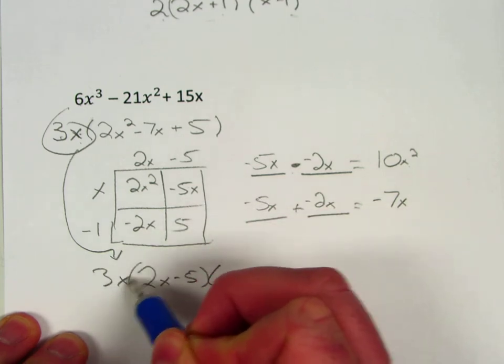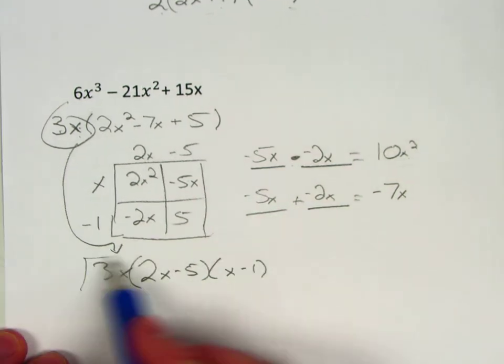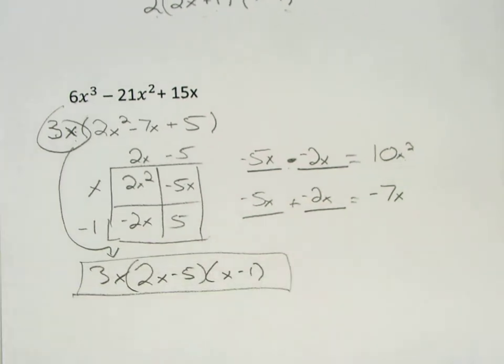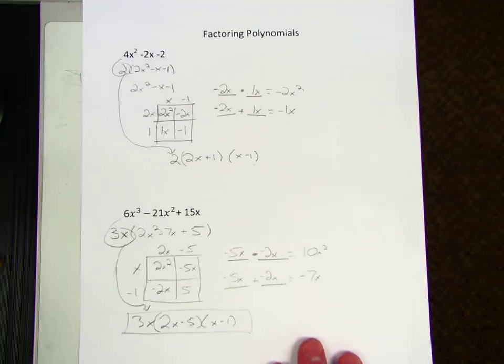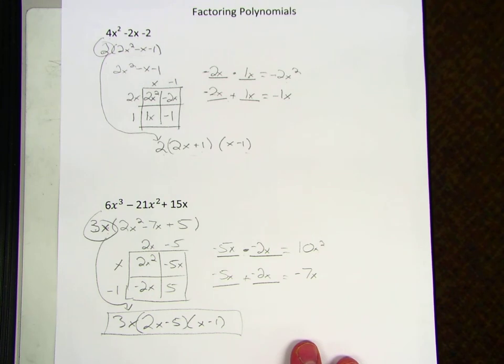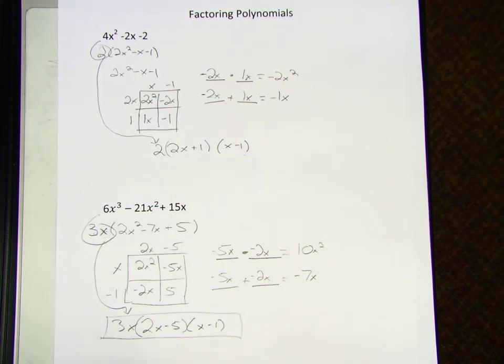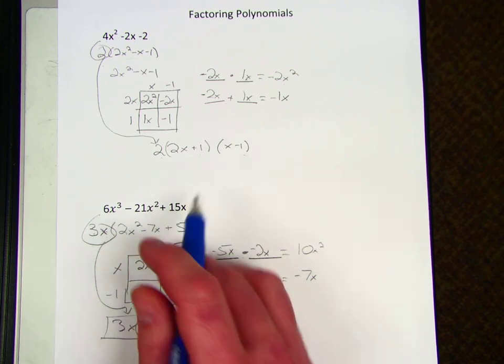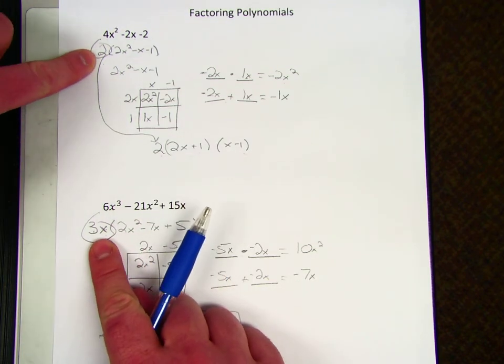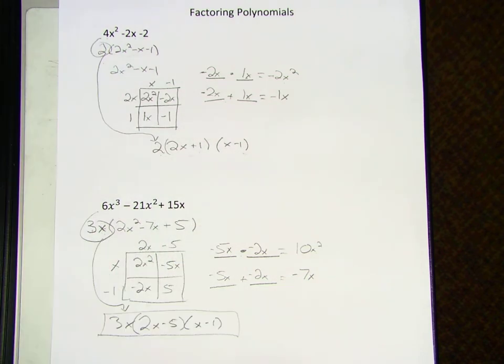And I can't forget about that original 3x that I factored out, so there are your factors. So to recap, really I didn't walk through the why of every step in this video because I'm already assuming you know how to factor with the box method. What we need to remember, once you know the basics of the box method, is that we need to get in the habit of trying to identify if there's a GCF before you start, and you've got to factor that out before you do the box.